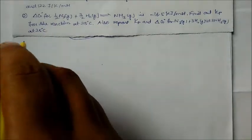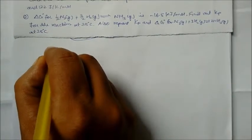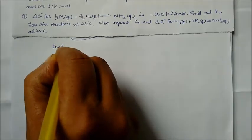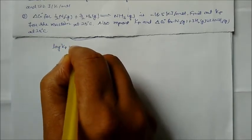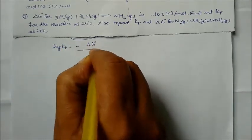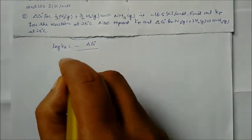We can directly find Kp. Using log Kp = −ΔG° / (2.303 RT).